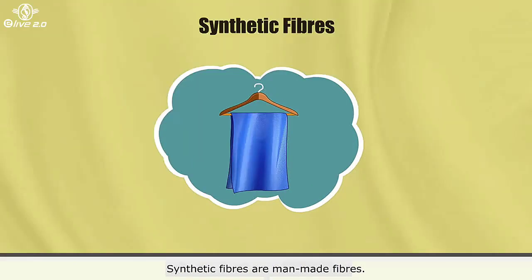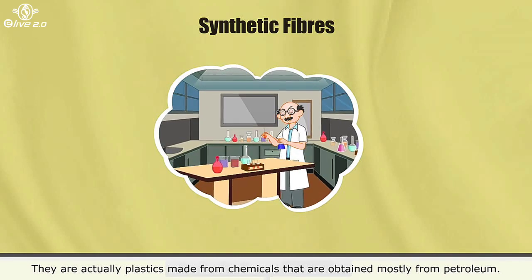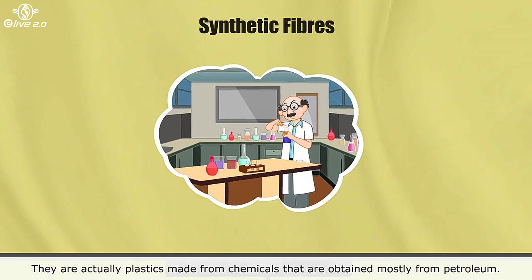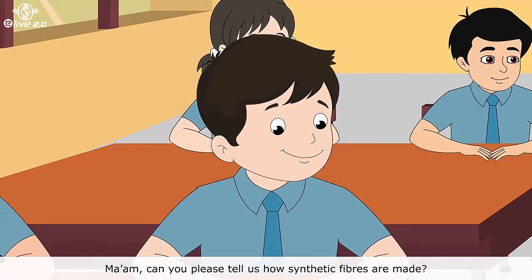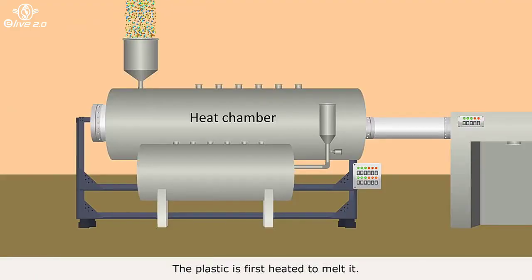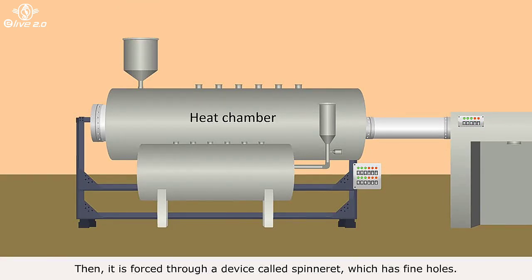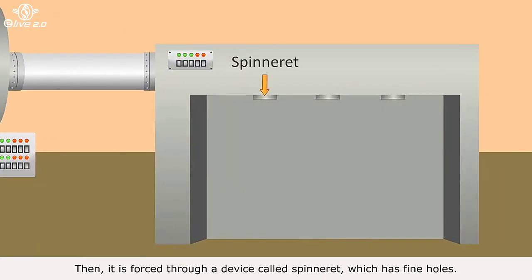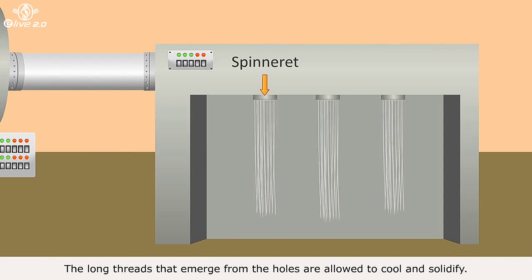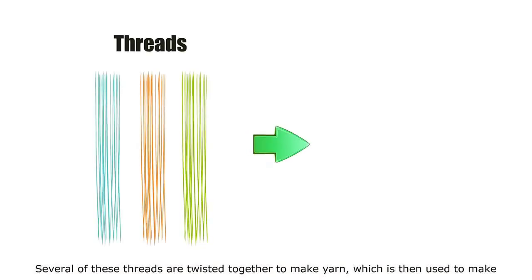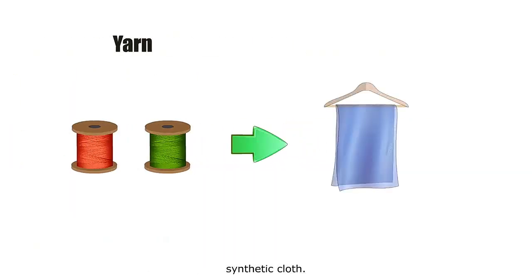Now, let us understand the synthetic fibres. Synthetic fibres are man-made fibres. They are actually plastics made from chemicals that are obtained mostly from petroleum. Nylon and polyester are some examples of synthetic fibres. The plastic is first heated to melt it. Then, it is forced through a device called spinneret, which has fine holes. The long threads that emerge from the holes are allowed to cool and solidify. Several of these threads are twisted together to make yarn, which is then used to make synthetic cloth.